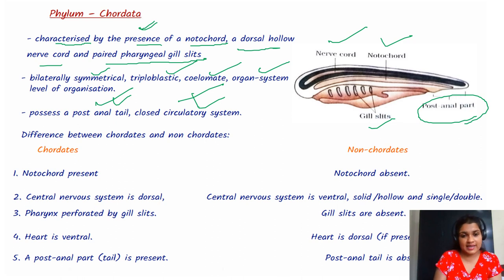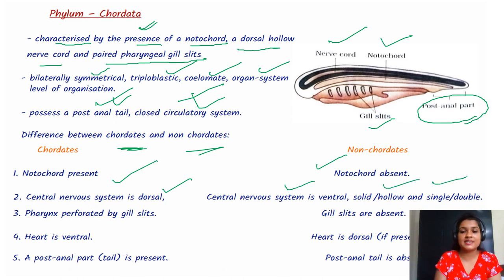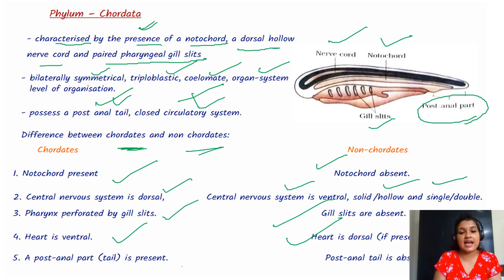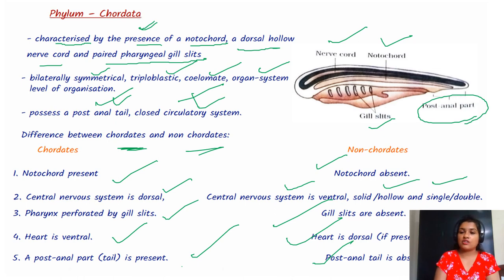Let us quickly discuss the differences between chordates and non-chordates. Chordates have a notochord present; non-chordates lack it. The central nervous system is dorsal in chordates and ventral in non-chordates. Chordates have pharynx perforated by gill slits; non-chordates do not. Heart is ventral in chordates and dorsal in non-chordates. Post-anal tail is present in chordates and absent in non-chordates.